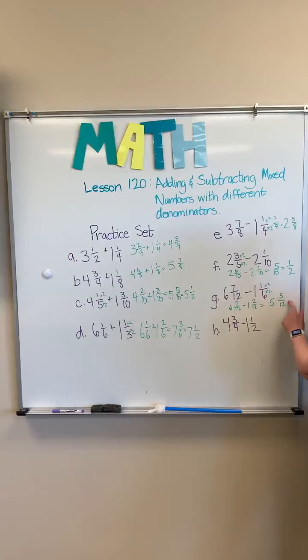And we know that this cannot be simplified or reduced because our five is a prime number.